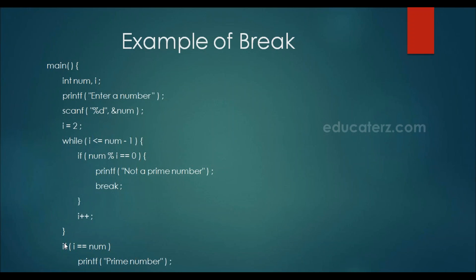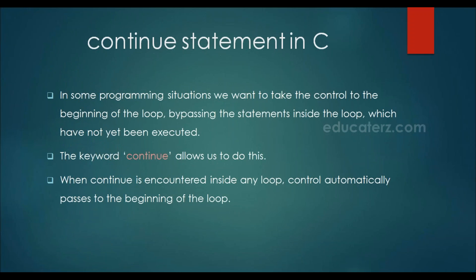After the loop, we check that if i and num are equal, only then will we say it is a prime number. If we came out of the loop in between, then i and num will not be the same, and the prime number message will not be executed. So we will get the output as 'not a prime number'.